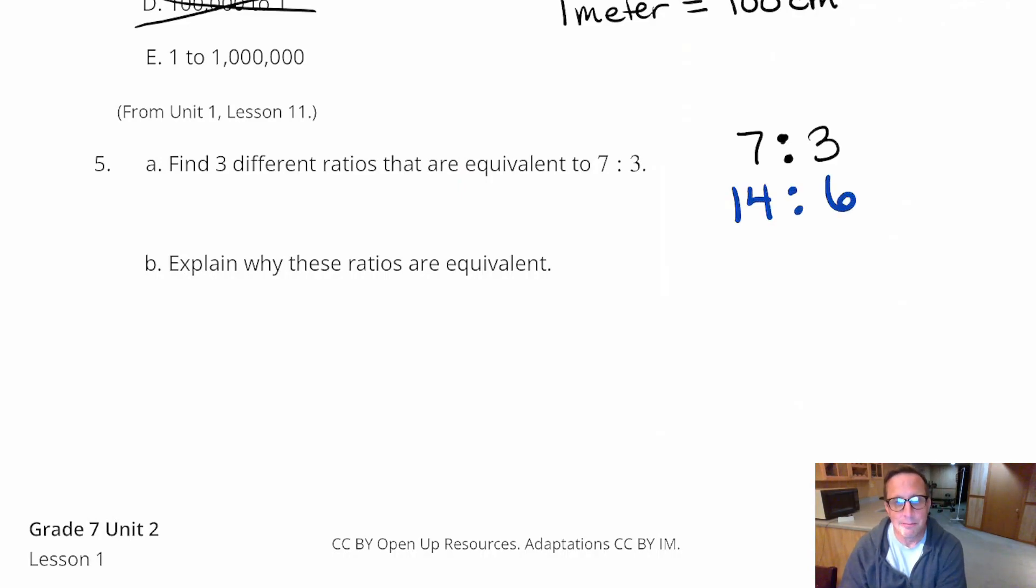Let's say I do ten. Let's say I use a scale factor of ten. Doing a scale factor of ten is pretty easy, because I just add a zero. So, seven times ten is seventy. Three times ten is thirty.